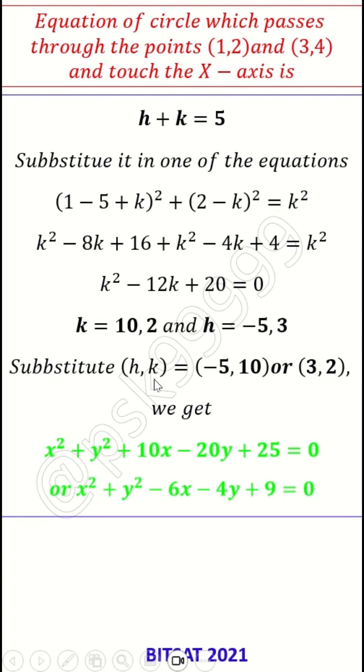I will get two points now: (h,k) are (-5,10) and (3,2), and k is also the radius. I can form two equations which are x² + y² + 10x - 20y + 25 = 0